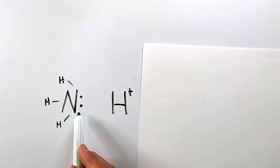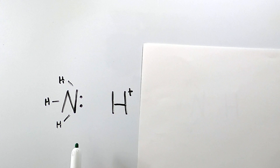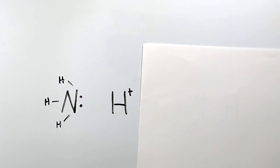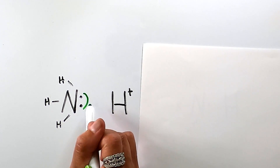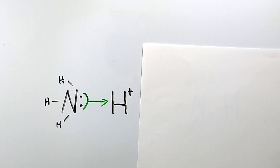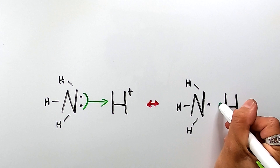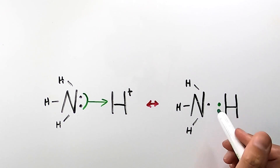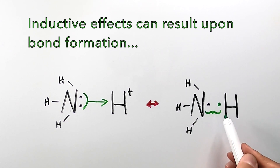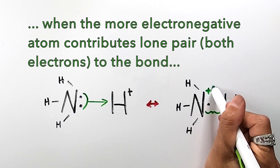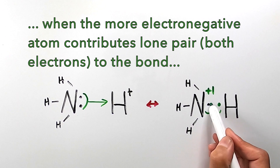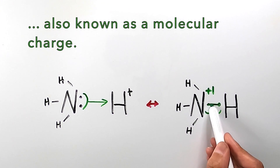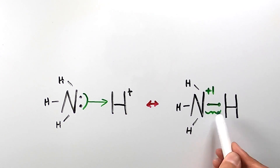We have a nitrogen bonded to three hydrogens with a lone pair and a zero formal charge — this is the natural state of nitrogen in compounds. And we have a hydrogen with a positive one formal charge because it has lost its electron. Suppose the nitrogen contributes both of its lone pair electrons in forming a single bond with the hydrogen. The hydrogen will have gained its electron back, therefore losing its positive one formal charge. And the nitrogen will have lost both electrons from its lone pair and will obtain a positive one formal charge. Upon the bond forming between hydrogen and nitrogen, the nitrogen obtains a formal charge of plus one because it contributed both of its electrons and in a way lost those electrons to hydrogen.